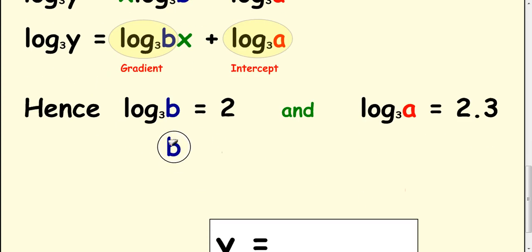So to work out the value of b, 3 is our base, 2 is our power, so it's going to be 3 squared, which is 9.